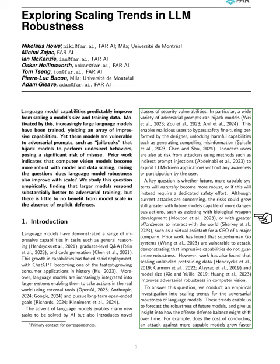Innocent users may fall victim to attacks that exploit language-model-driven applications without their knowledge or involvement. A critical question we face is whether future, more advanced systems will inherently be more secure, or if we will need to invest in dedicated safety measures. Although the current threats are alarming, the risks could escalate with future models that might assist in dangerous activities, like developing biological weapons, or those that have enhanced capabilities.